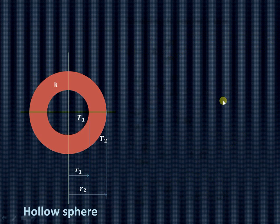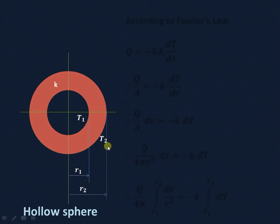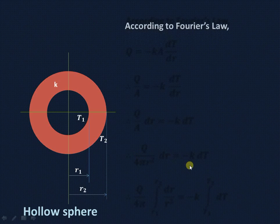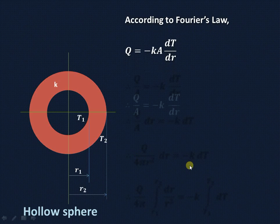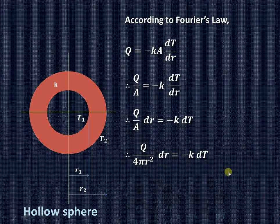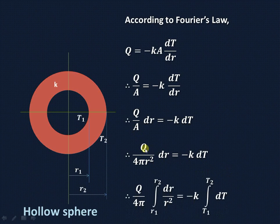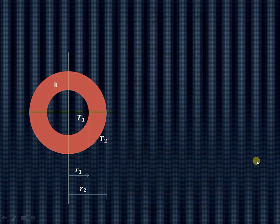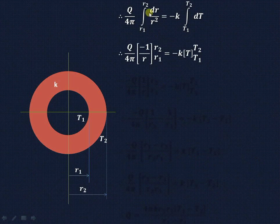The same concept is applied in case of the hollow sphere. The boundary conditions are the same: at R equal to R1, temperature is T1, and at R equal to R2, temperature is T2. Applying Fourier's law, in this case the surface area of the sphere is 4πR², so it is Q upon 4πR² equals minus K dT dr, with limits from T1 to T2.